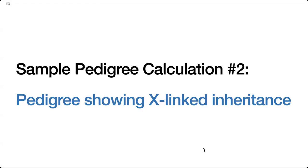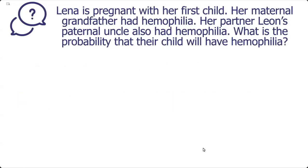Here is another sample probability calculation from a pedigree showing X-linked inheritance. The question states: Lena is pregnant with her first child. Her maternal grandfather had hemophilia. Her partner Leon's paternal uncle also had hemophilia. What is the probability that their child will have hemophilia?